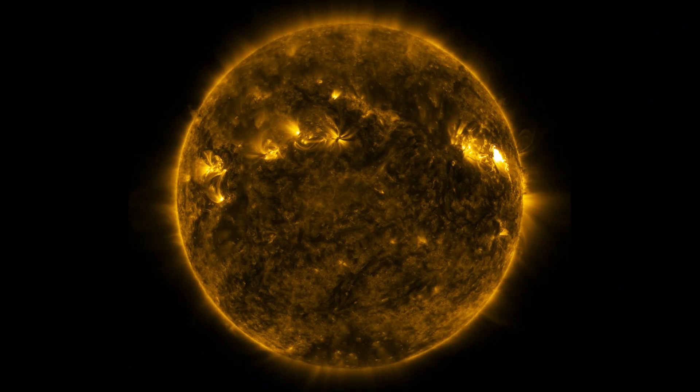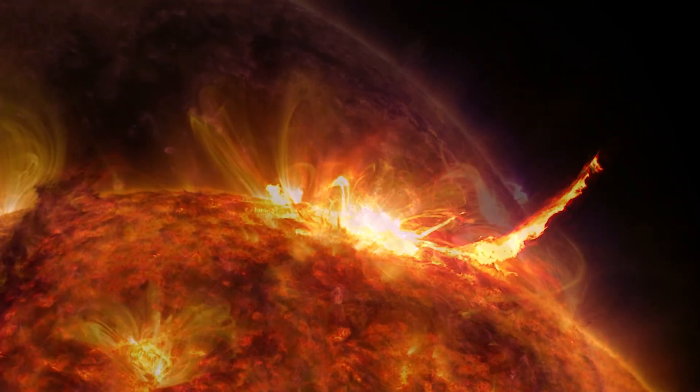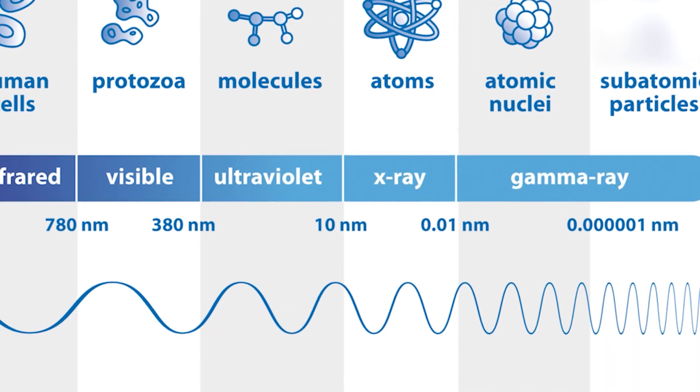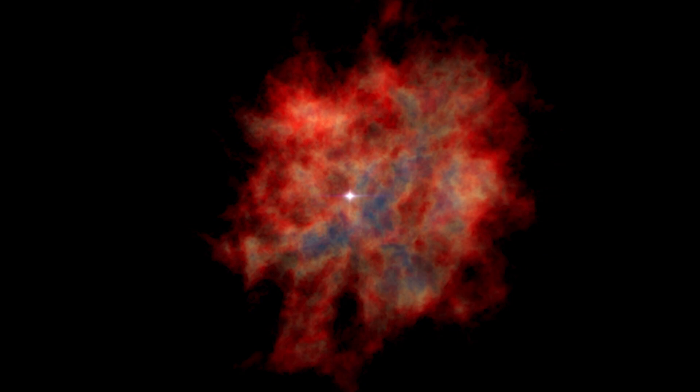Space radiation comes primarily from the Sun, which accelerates particles through space with flares and coronal mass ejections. But space radiation also comes from high-energy galactic cosmic rays, or GCRs, which are particles coming from outside our solar system that are formed by events like collapsing stars.